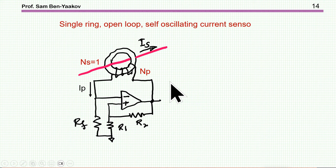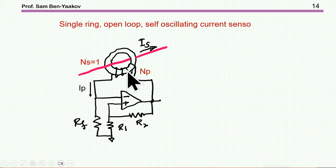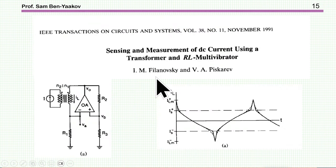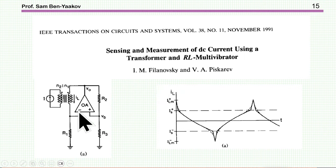We can actually use this oscillator to measure current — very similar to what we had before, except this is now a self-oscillating circuit. This is the non-linear inductor, this is a toroid, and here is the current we want to measure. This idea is not new — it was published in 1991. This is the original paper, and you see they're using an operational amplifier, but actually it's used as a comparator. This is the non-linear part, and this is the coupling to the sense current.